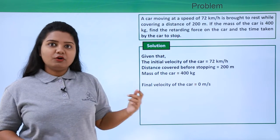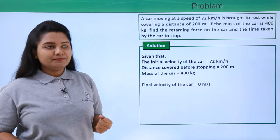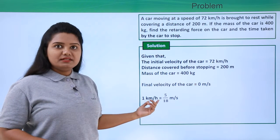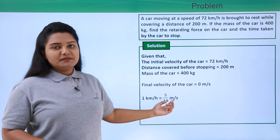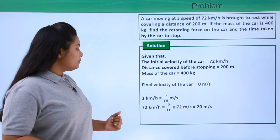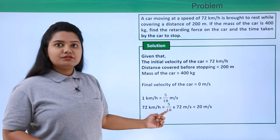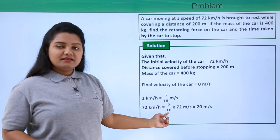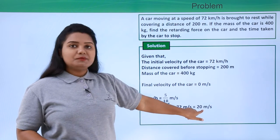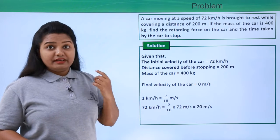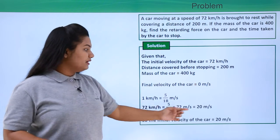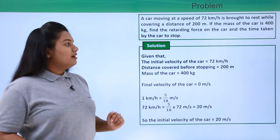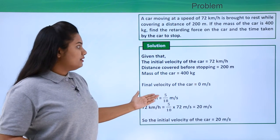So we will convert 72 kilometers per hour into meters per second. Since 1 kilometer per hour equals 5/18 meters per second, 72 kilometers per hour equals 72 × 5/18, which equals 20 meters per second. So our initial velocity is 20 meters per second.